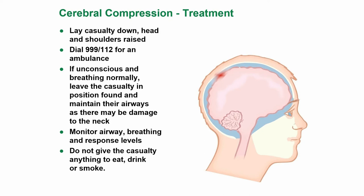Treatment for cerebral compression: lay the casualty down with head and shoulders raised and dial the emergency services for an ambulance. If unconscious and breathing normally, leave the casualty in the position found and maintain the airway, as there may be damage to the neck. Monitor airway, breathing and response levels. Do not give the casualty anything to eat, drink or smoke.